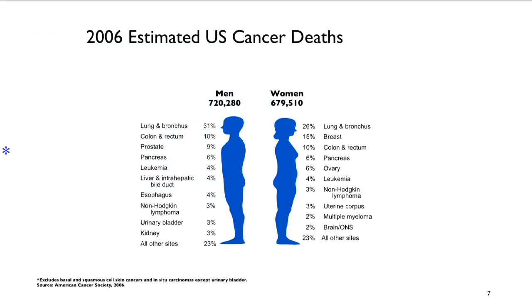Looking at estimates for 2006 in the United States, about 720,000 men and 680,000 women died of cancer. For both sexes, the leading cause was cancer of the lung and bronchus. For men, the second most important cause was cancer of the colon and rectum, which was third for women. For women, the second most important cause was breast cancer.